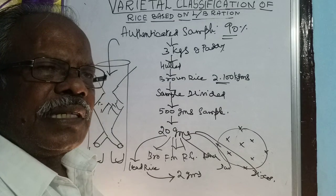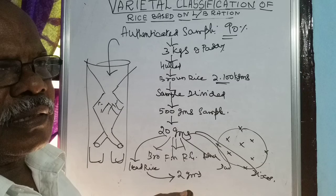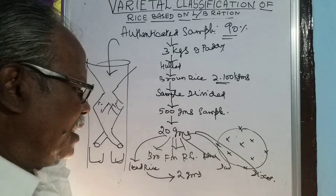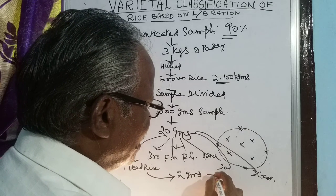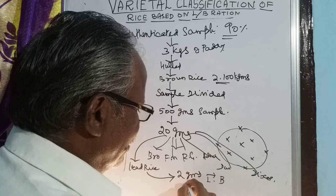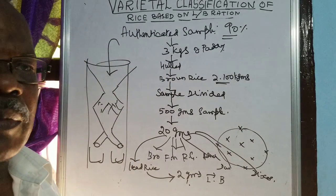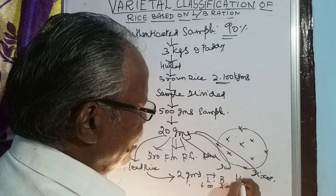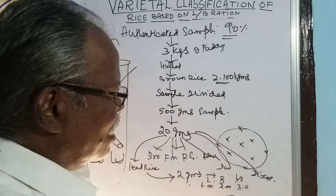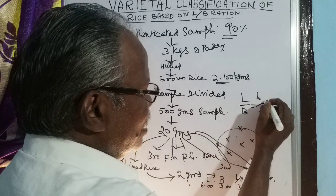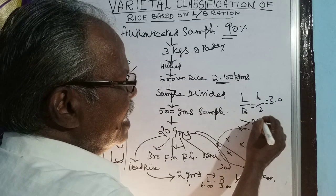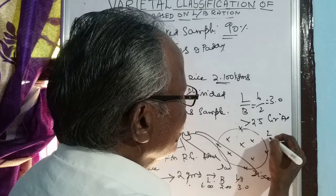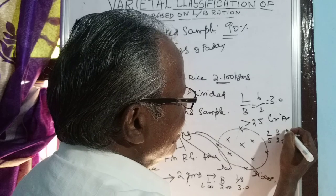Approximately, in 2 grams there will be around 120 grains. Each and every grain must have its LB ratio measured. In a paper, all measurements are tabulated. For example, if length is 6 mm and breadth is 2 mm, then the LB ratio is 3 (6 ÷ 2 = 3).